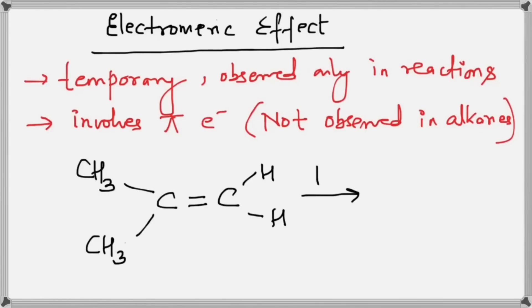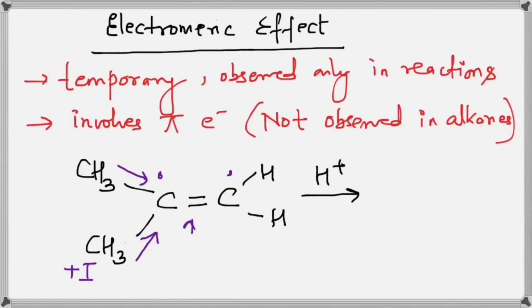When H⁺ approaches this alkene, hydrogen has a positive charge, and electrons will move towards the positive charge. The pi bond will break and electrons will shift towards either the carbon attached to CH₃ or the carbon attached to hydrogen. We decide the direction using the inductive effect — the CH₃ group will push electrons towards the carbon due to its +I effect, and the same applies to the other CH₃ group, so electrons move towards the right.